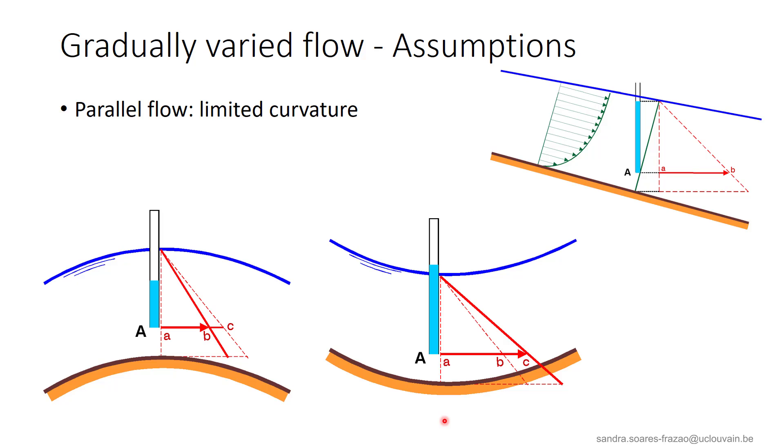On the opposite, as we can see on the right-hand side, a significant concave curvature will induce an overpressure, and the flow is compressed by the change in direction imposed by the bottom line. The pressure distribution thus shows larger values compared to the hydrostatic distribution.